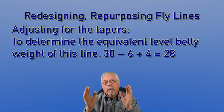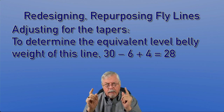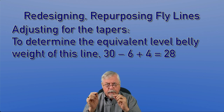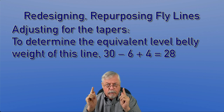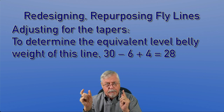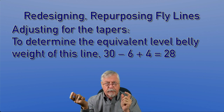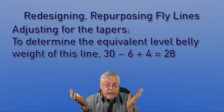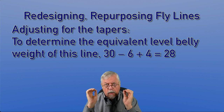To determine the equivalent level belly, we take 30 feet — because that's what we know for the weight — subtract six and add four, which gives us 28. So that 30-foot section with a six-foot front taper is equivalent to 28 feet of level line. If you've also got to work in the back taper, you do exactly the same thing. For example, with a 40-foot head and a six-foot front and six-foot back taper, you'd subtract two from either end and end up with 36. That's the level line equivalent — that's what we're after.